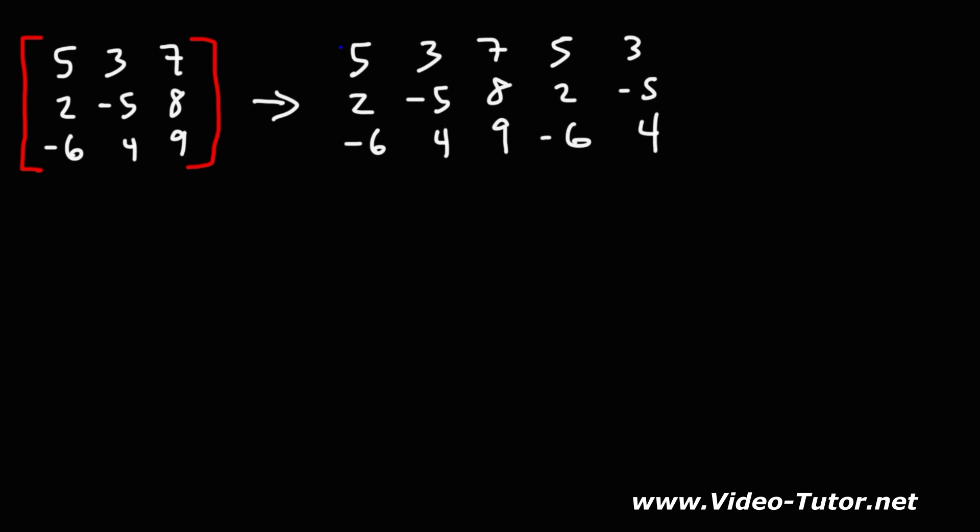So let's multiply these numbers first. 5 times negative 5 is negative 25. Now what's negative 25 times 9? If you have 9 quarters, how much money do you have? 9 quarters is 225, so 25 times 9 is 225. Now we have a negative sign, so this is going to be negative 225.